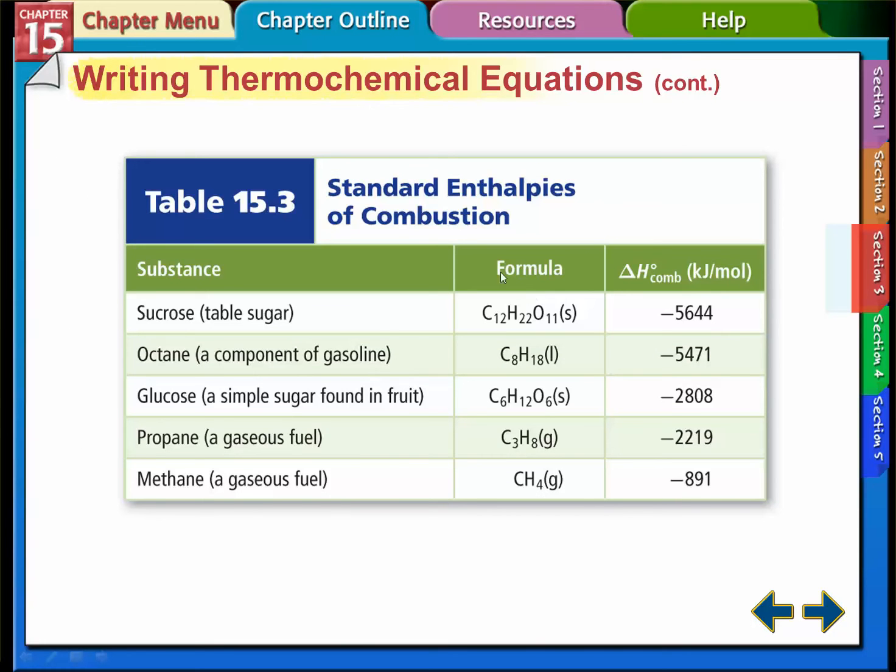And these are standard enthalpies of combustion for some other things: octane in gasoline, glucose, sucrose or table sugar, propane, methane - all release different amounts of energy per mole. These are kilojoules per mole. It's important to remember that these numbers are how much kilojoules per mole.